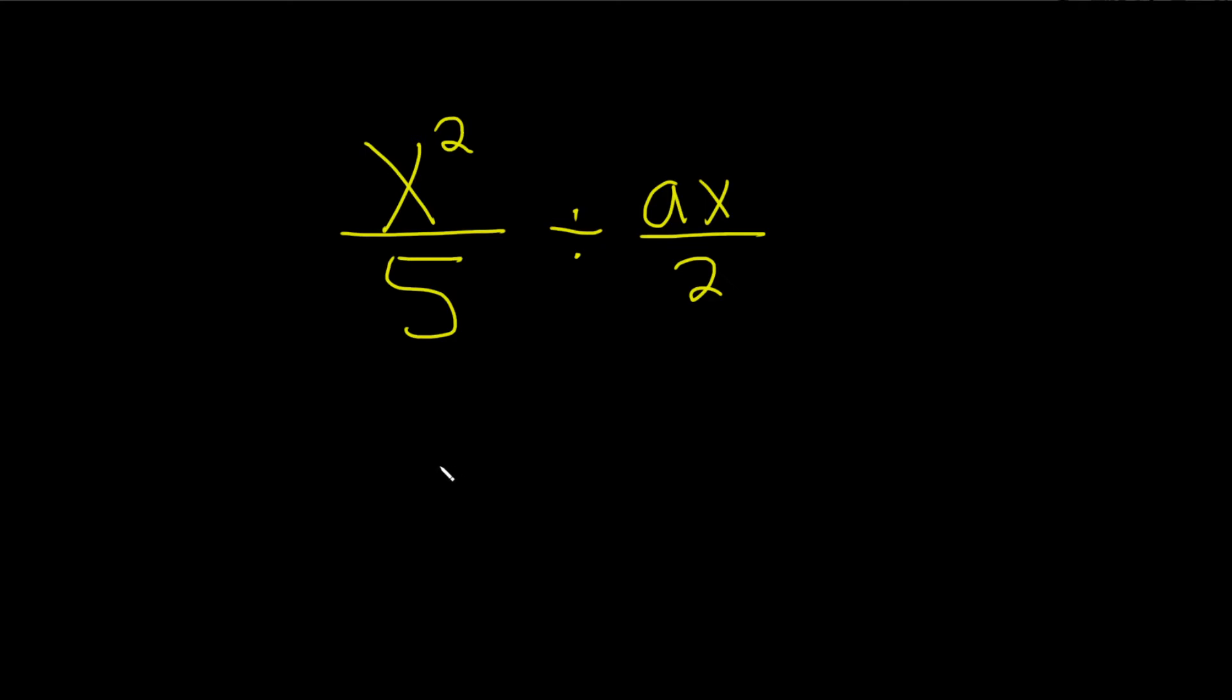x squared over 5 divided by ax over 2. Step 1 is to turn this division problem into a multiplication one.